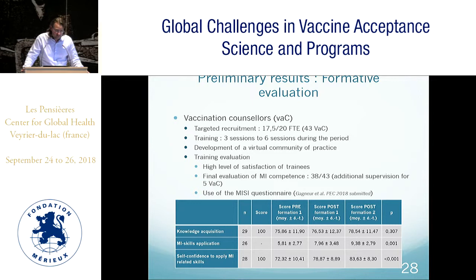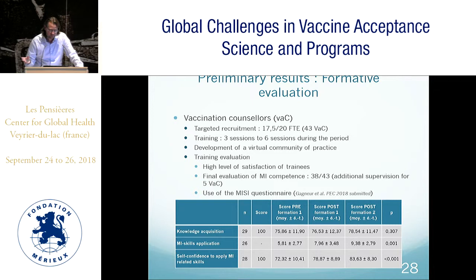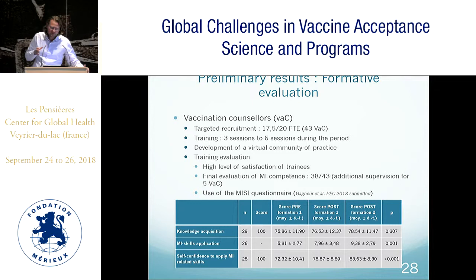Now for the preliminary results — please be very indulgent as the program started only a few months ago. We don't yet have the summative evaluation of the implementation, but we have some key early findings. At the vaccination counsellor level, we have nearly reached our targeted recruitment of 20 full-time equivalents — we trained 23 vaccination counsellors, mostly working half-time. One key lesson: we planned three training sessions but had to increase to six sessions because recruitment proceeded at different rates across maternity wards, requiring smaller groups.